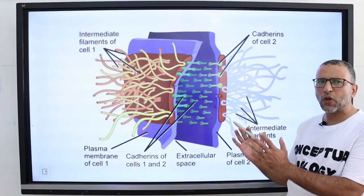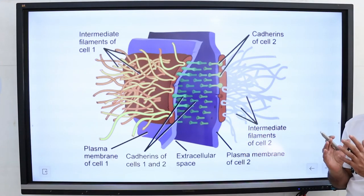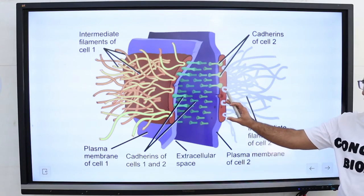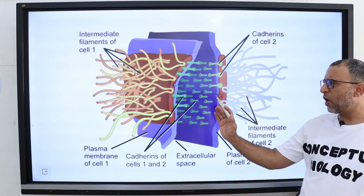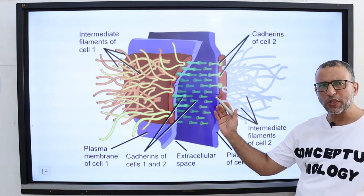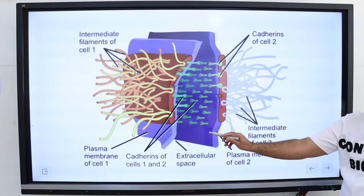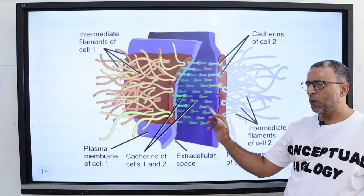Advantage of desmosomes: they hold the cells together at one point as a rivet or spot welds. Desmosomes allow cells to form strong sheets and substances still pass freely through the intercellular spaces between the plasma membranes.